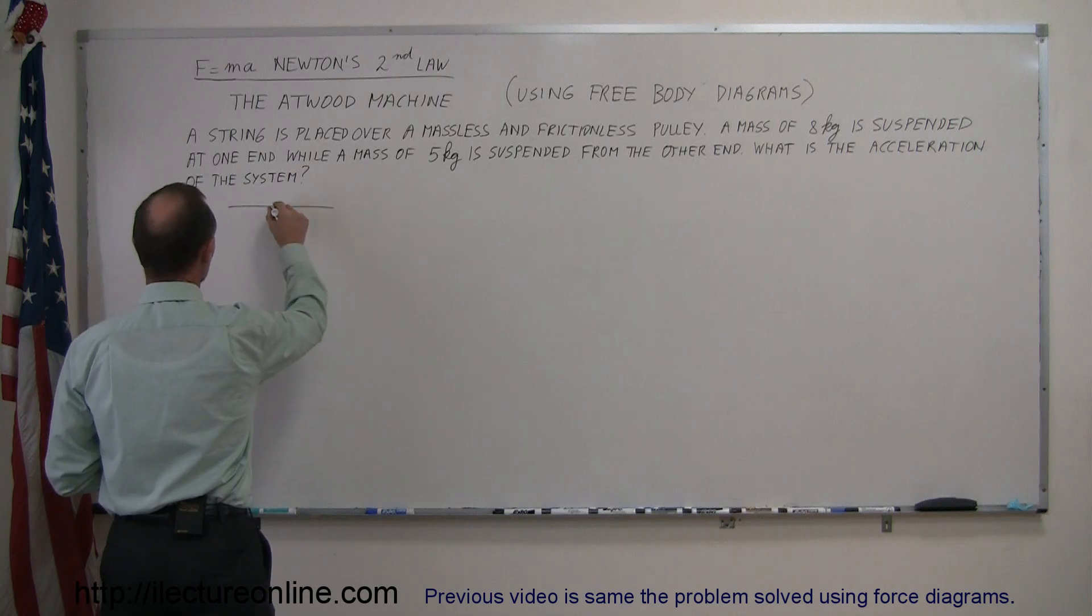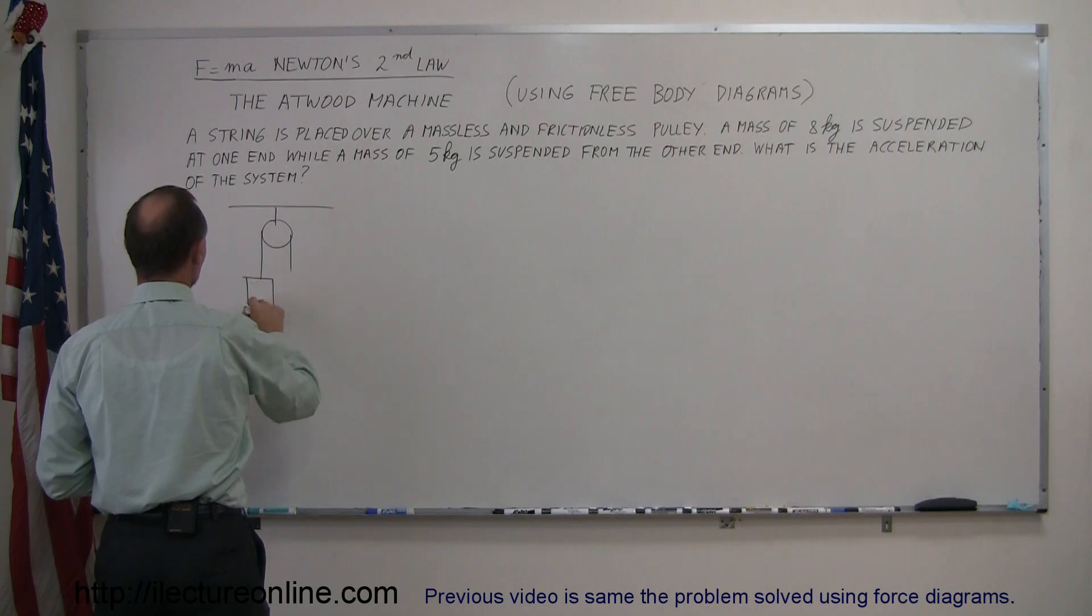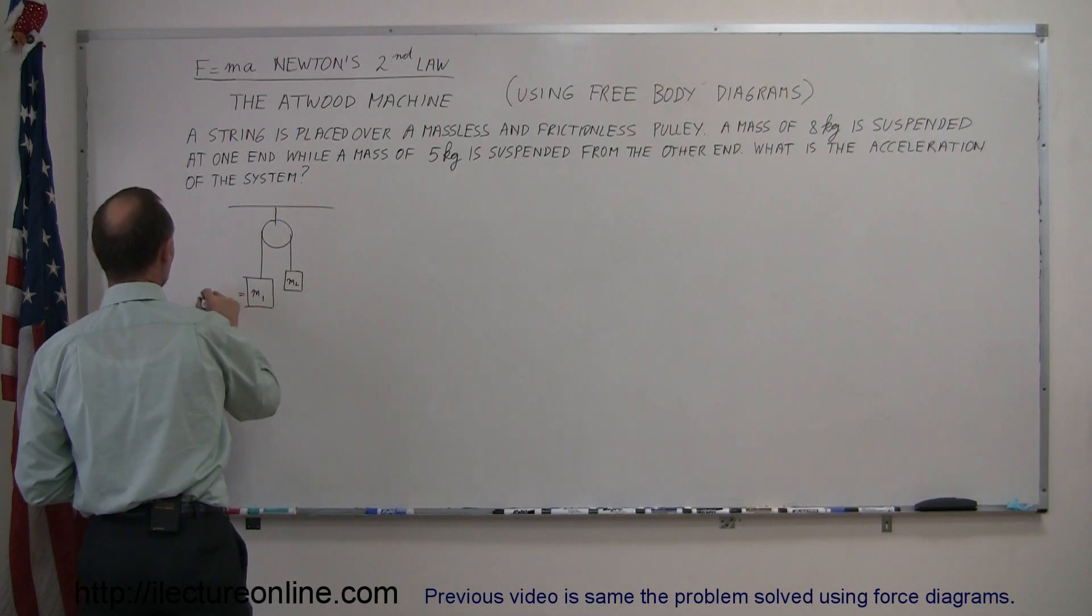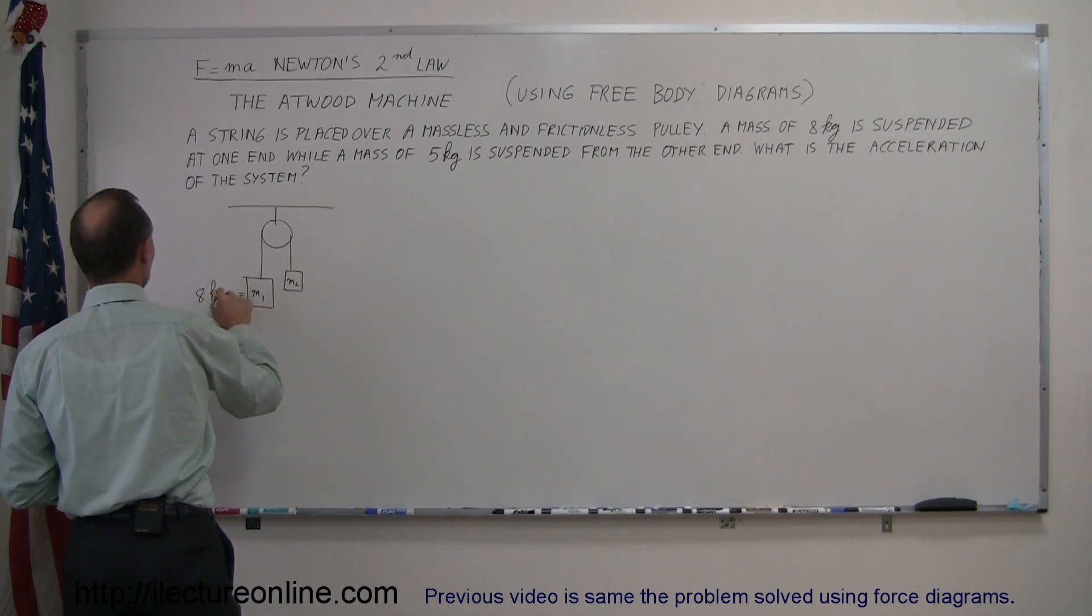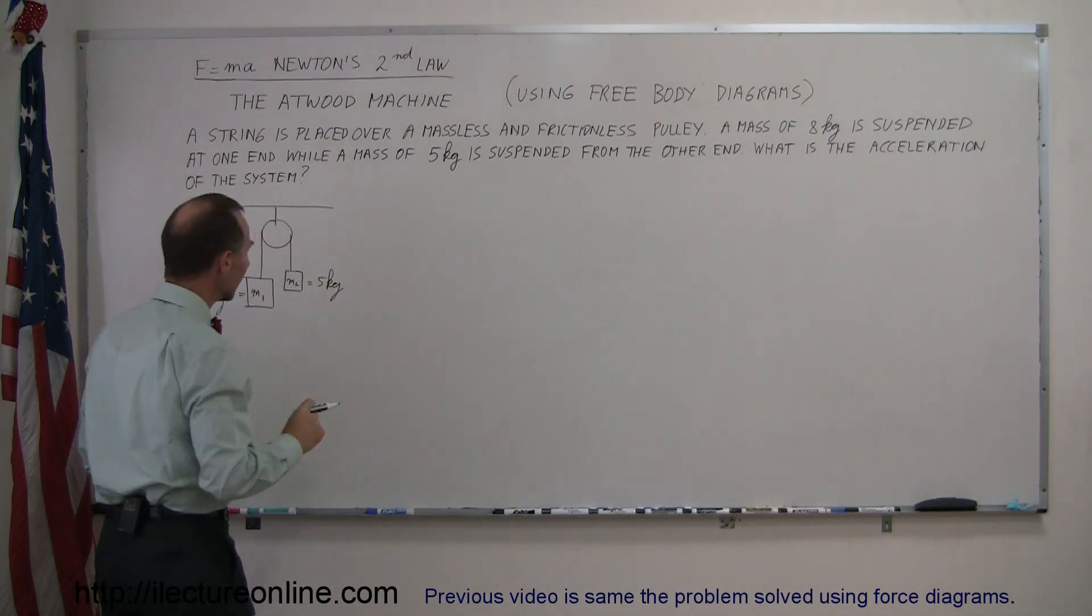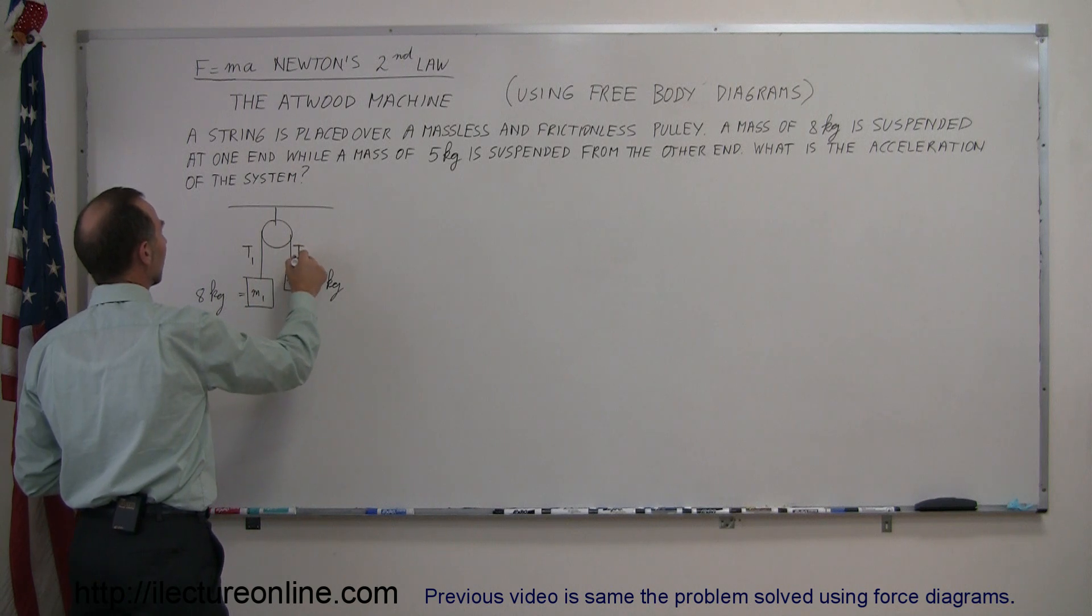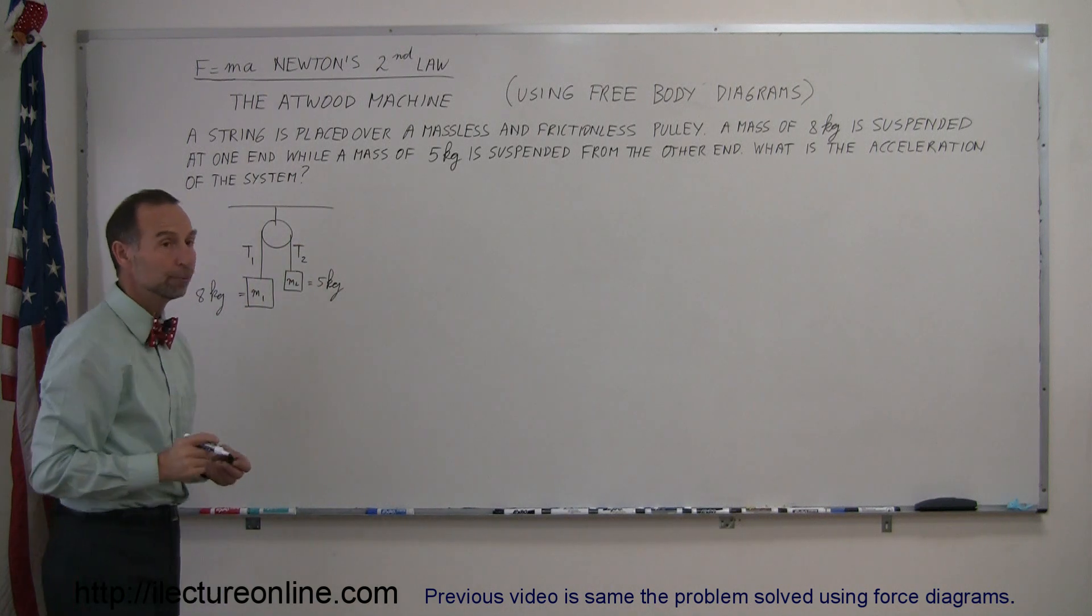So, here's a ceiling. From the ceiling, we suspend the pulley. From the pulley, we will suspend two masses, a big mass, call it m1, and a smaller mass, call it m2, realizing the big mass has a mass of 8 kilograms, and the small mass has a mass of 5 kilograms. We realize we have tension in the string, so we'll call the tension on the left side tension 1 and the tension on the right side tension 2.